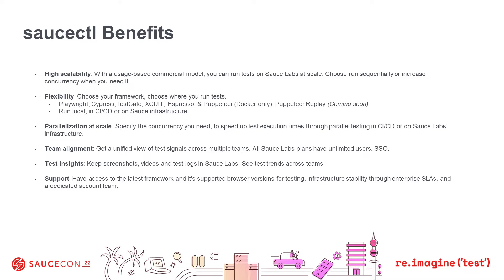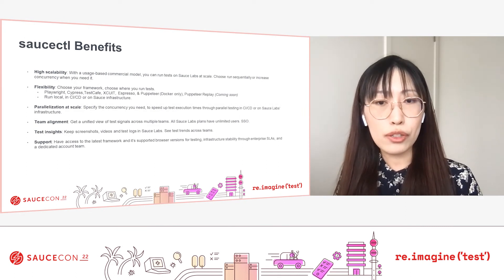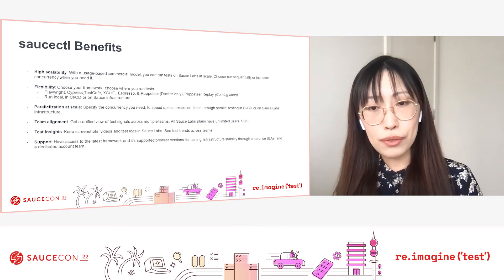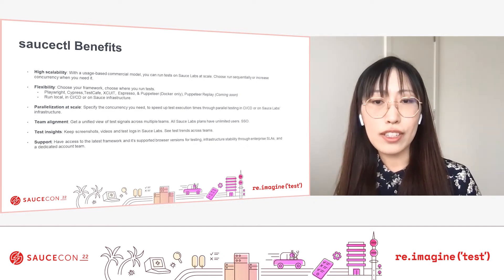Parallelization at scale: specify the concurrency you need to speed up test execution times through parallel testing in CI/CD on SauceLabs infrastructure. Team alignment: get a unified view of test signals across multiple teams. All SauceLabs plans have unlimited users and single sign-on available. Team insights: keep screenshots, video, and test logs in SauceLabs and see test trends across teams. Support: have access to the latest framework and supported browser versions for testing, infrastructure scalability through enterprise SLAs, and a dedicated account team.